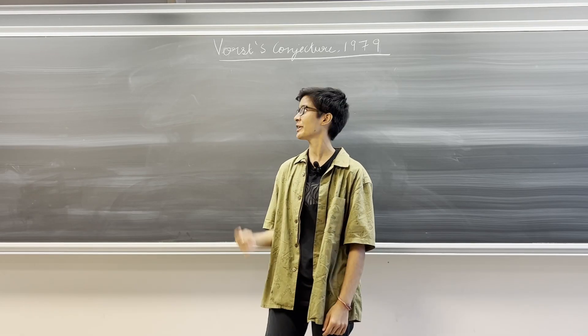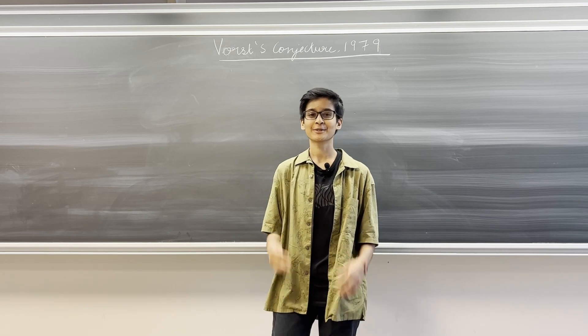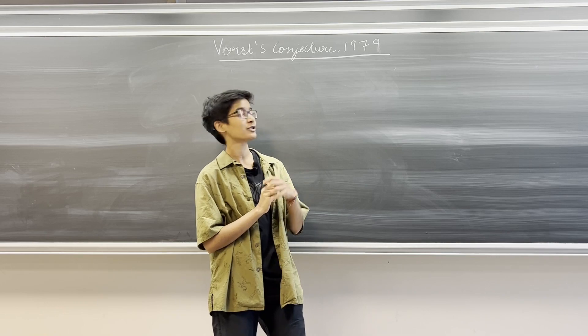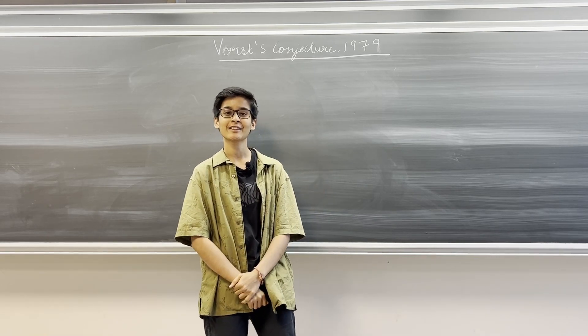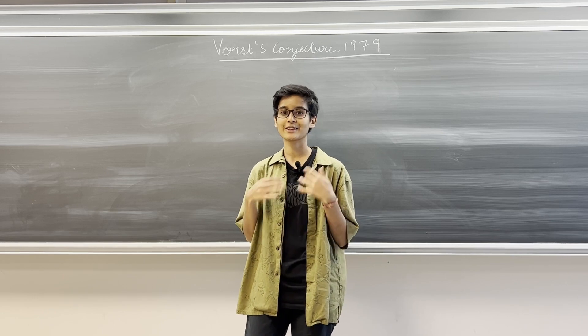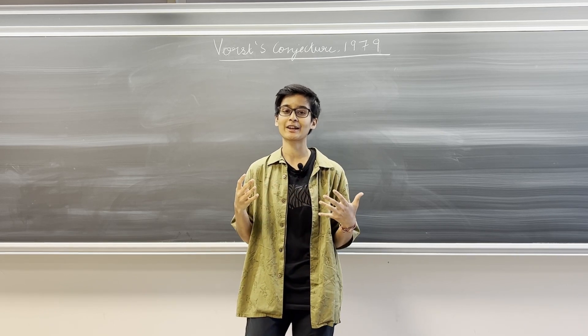Hi! I'll be talking about Vorst's conjecture. This is a conjecture in algebraic K-theory that was introduced by the mathematician Vorst in the year 1979, and even though certain versions and certain cases of the conjecture have been proven, the conjecture remains open in its full generality as of today.